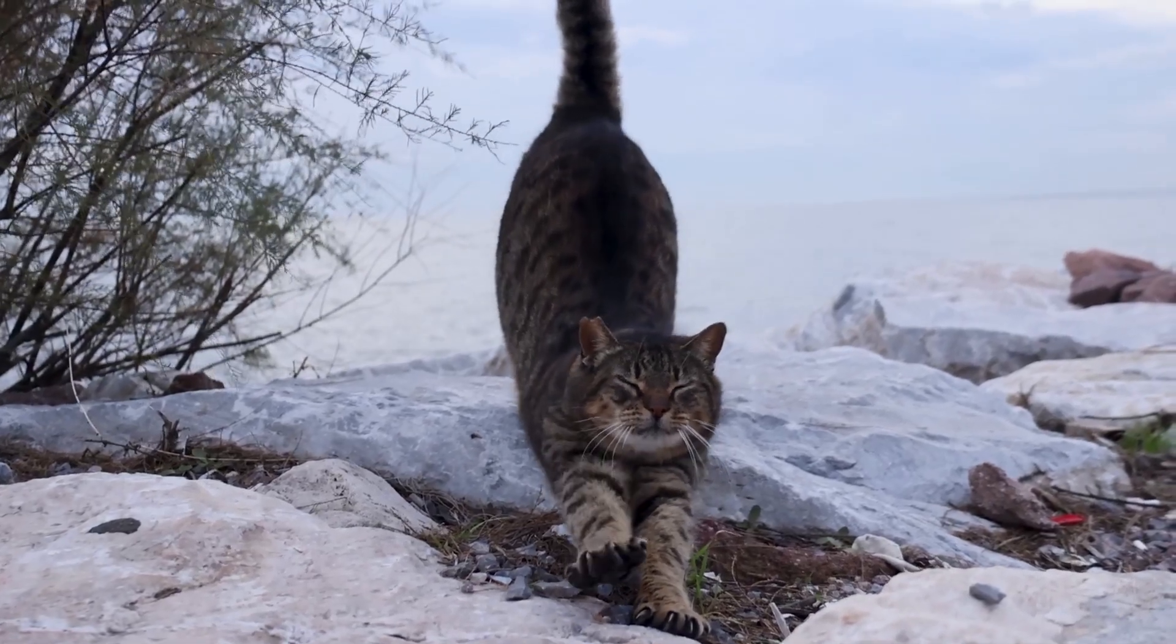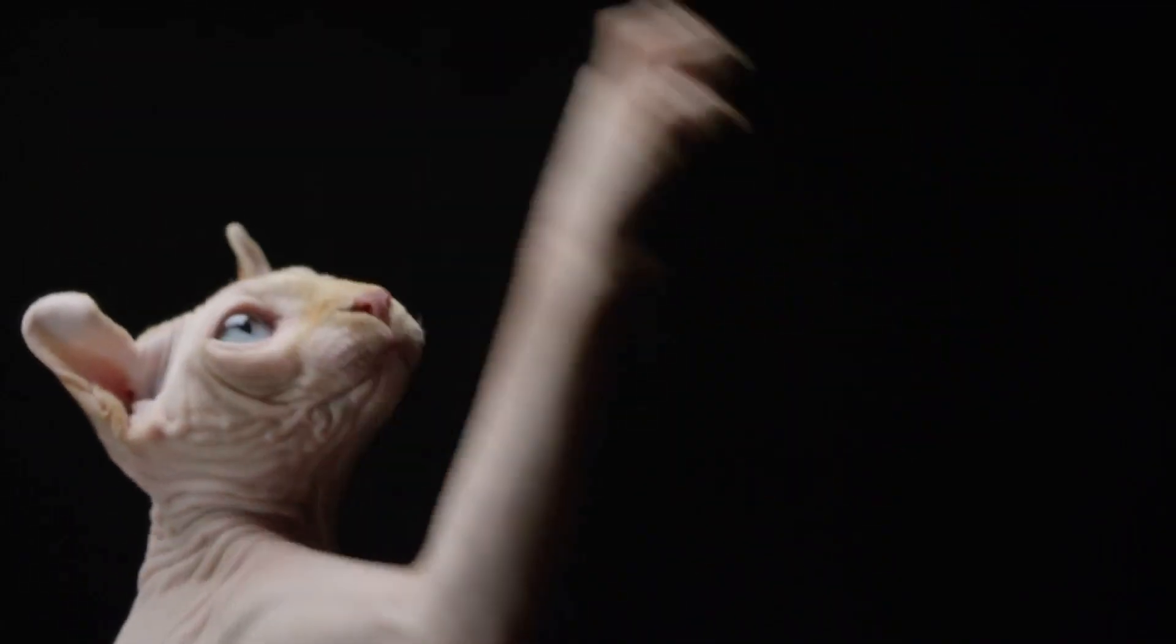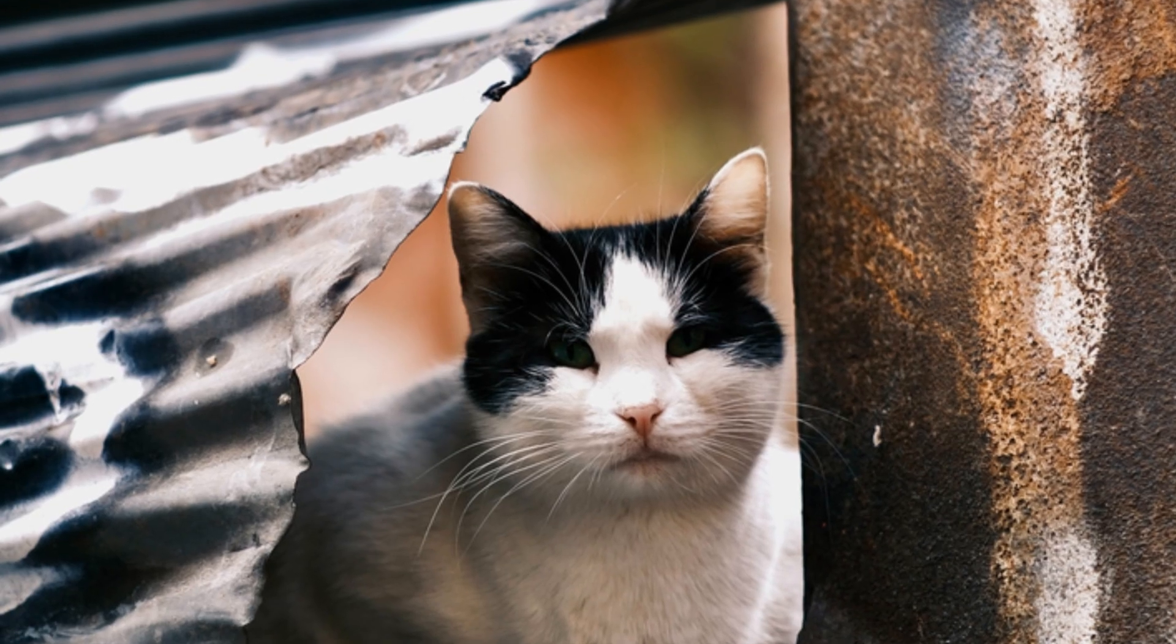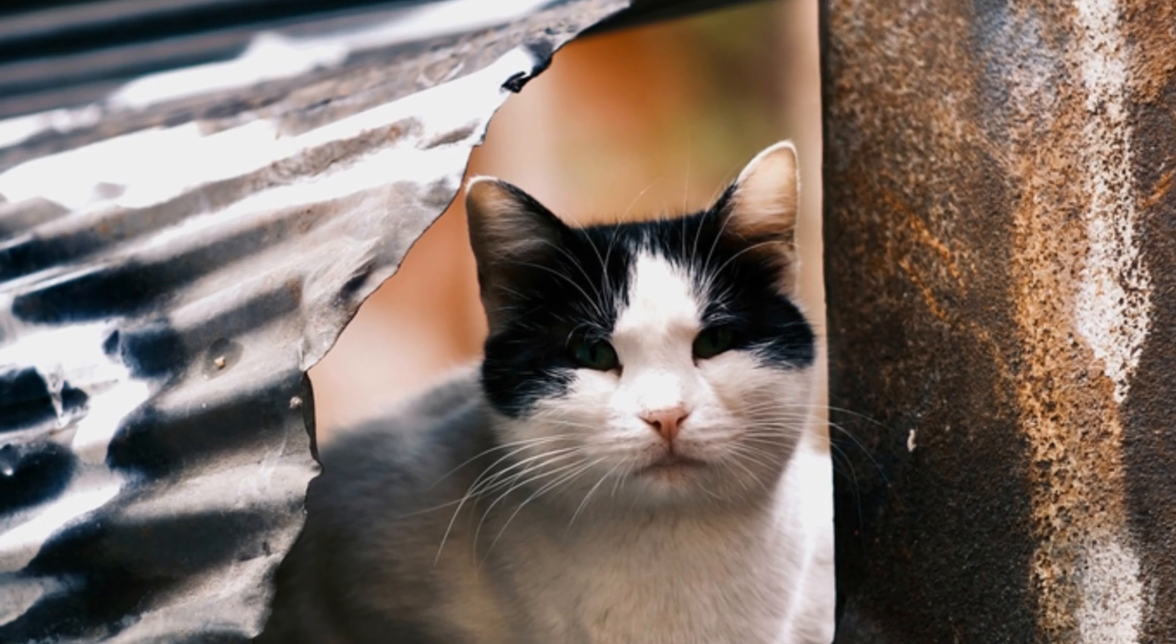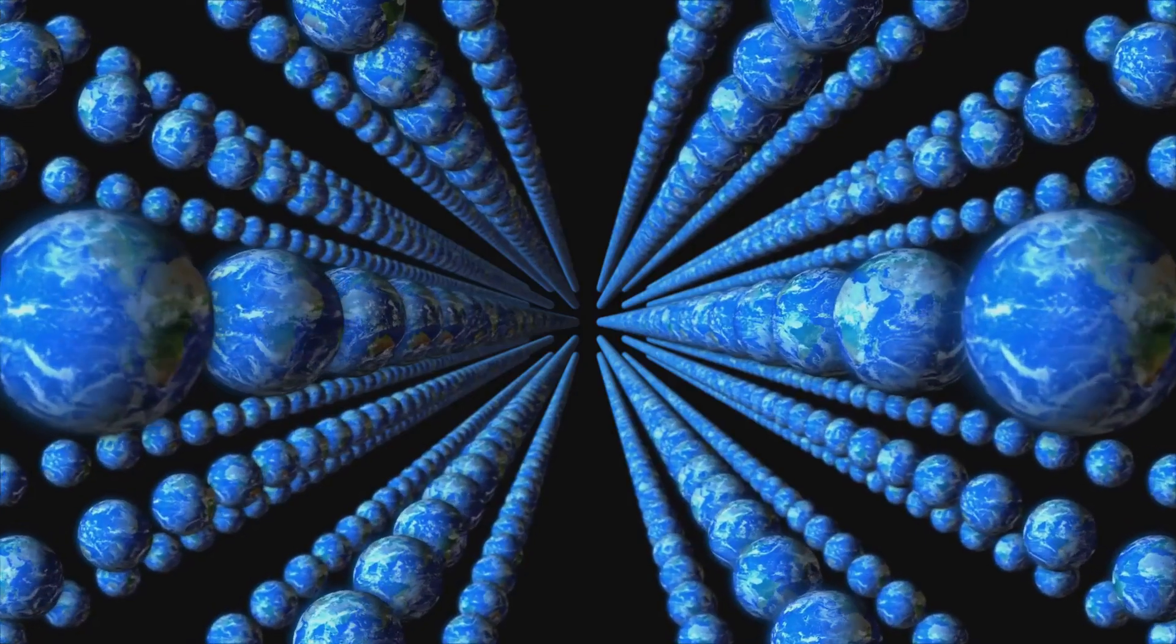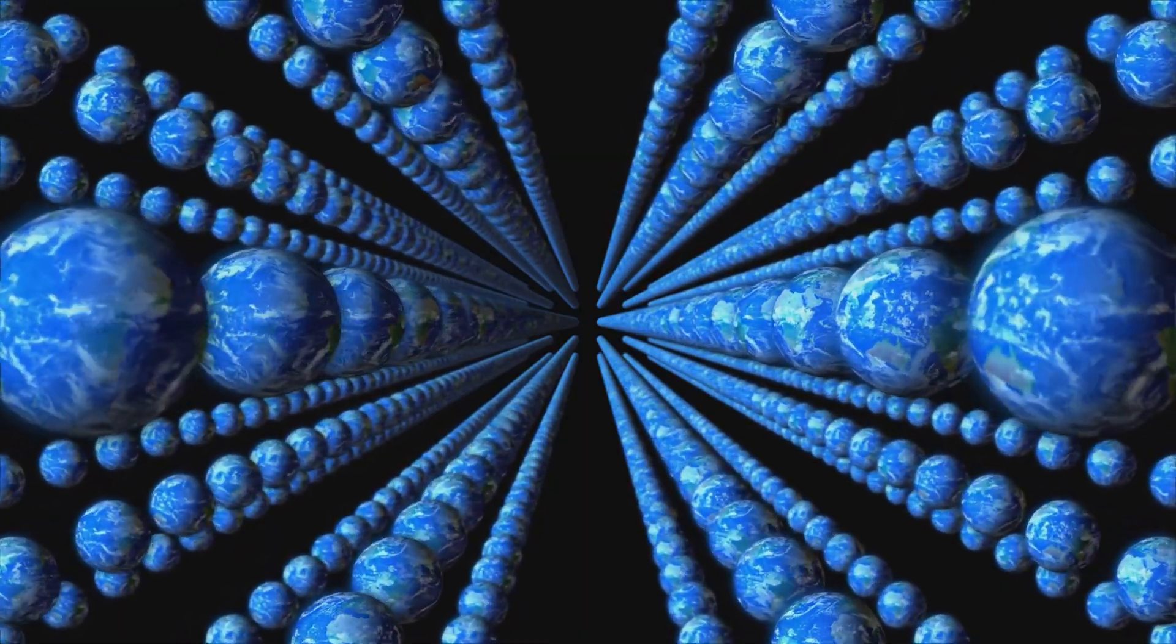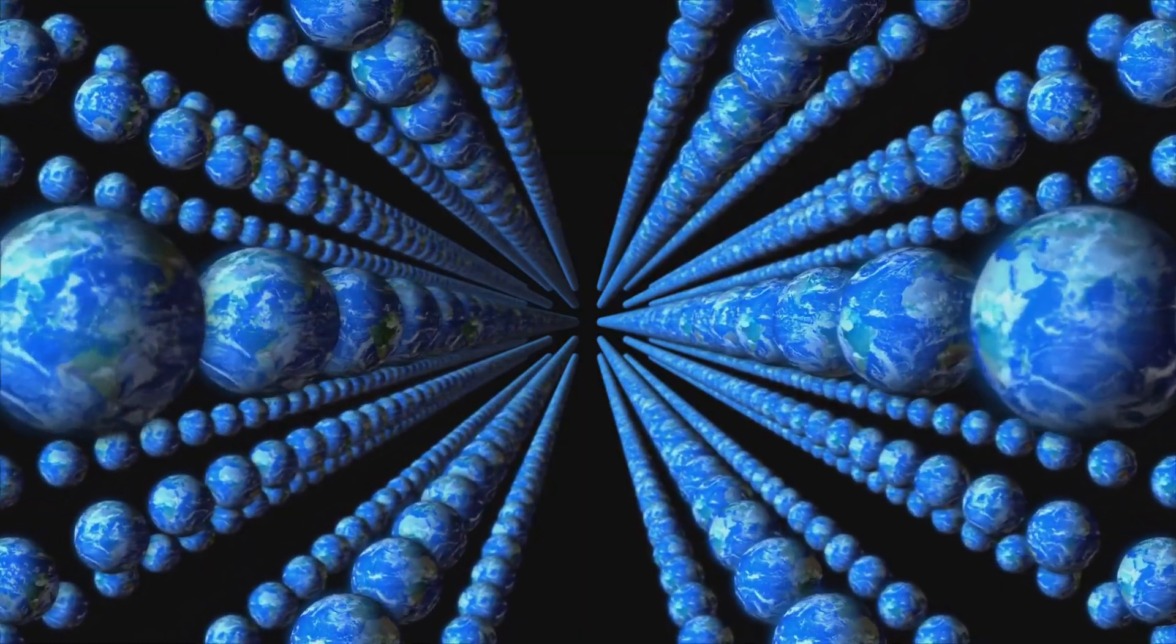Perhaps the cat escapes unharmed. Maybe it transforms into a new species entirely. Or, stranger yet, it transcends the limitations of our reality, entering a different dimension altogether. Schrödinger's cat, in the context of poliguity, ceases to be a binary dilemma and becomes a gateway to infinite possibilities.